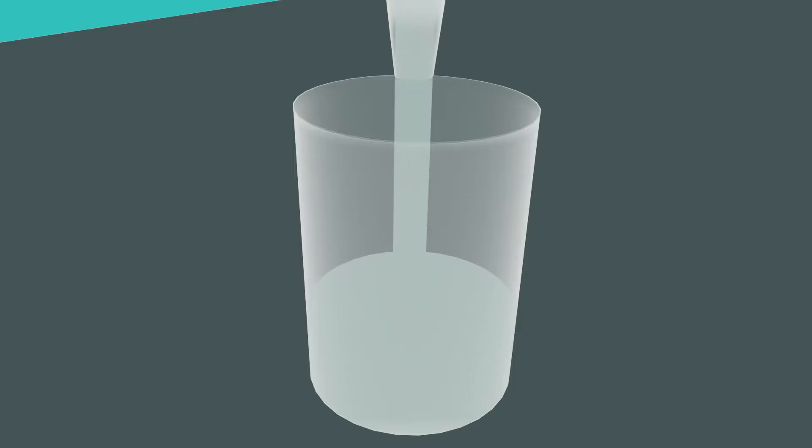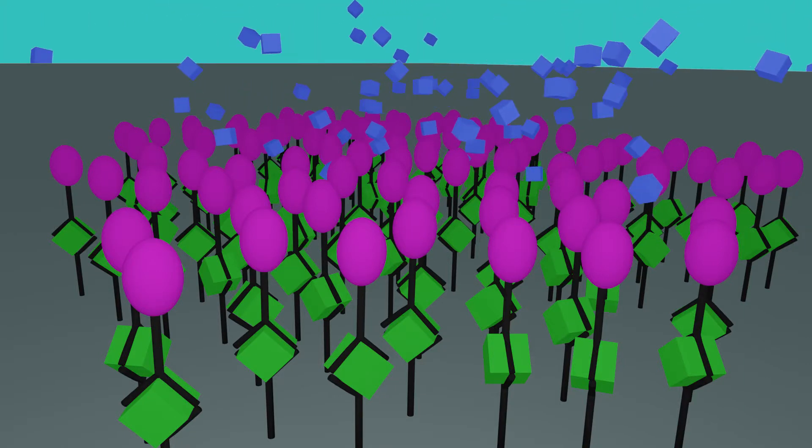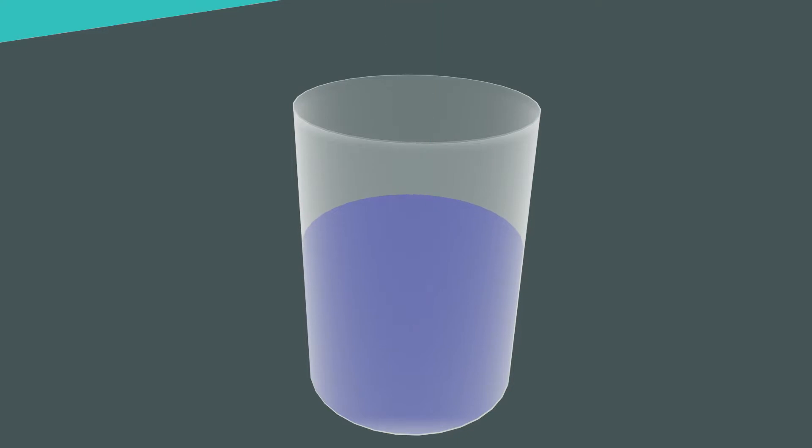A substrate is added, and over a set time, reacts with the conjugate, changing the color of the liquid. Finally, a stopping solution is added to halt the reaction for interpretation.